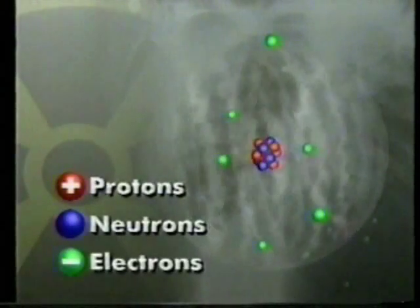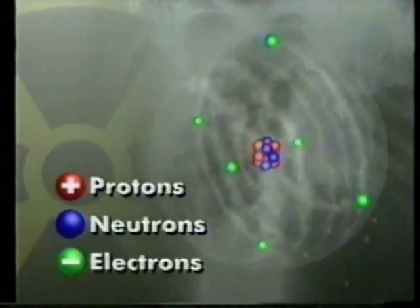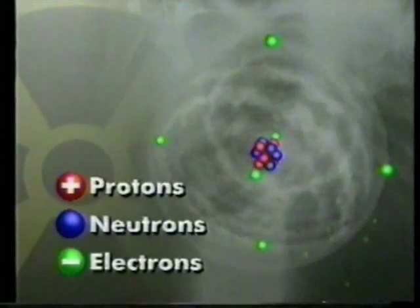The protons have a positive charge, the electrons have a negative charge, and the neutrons have no charge.